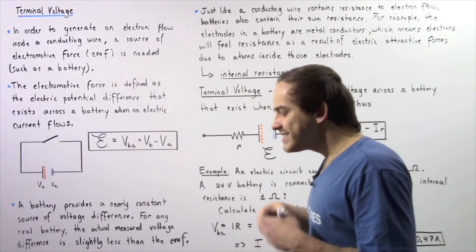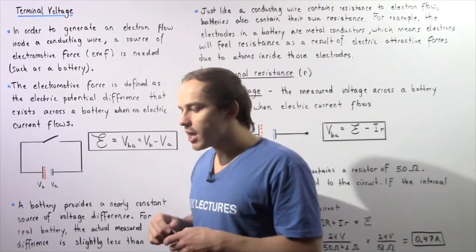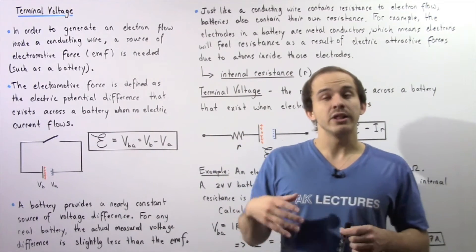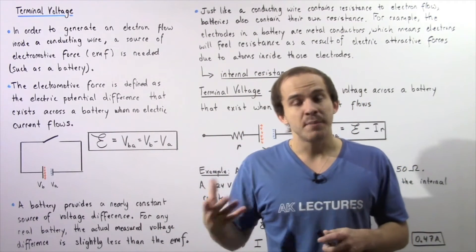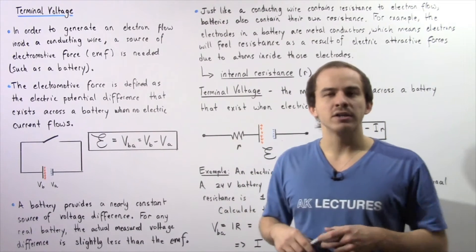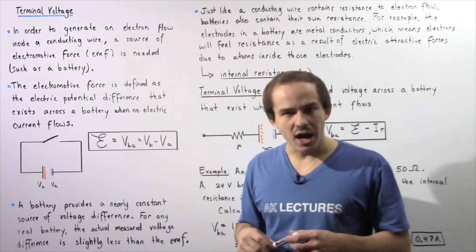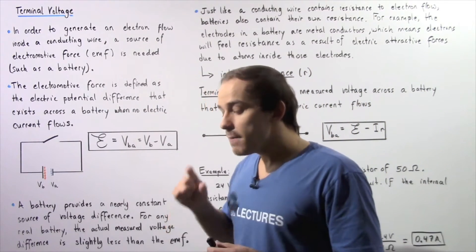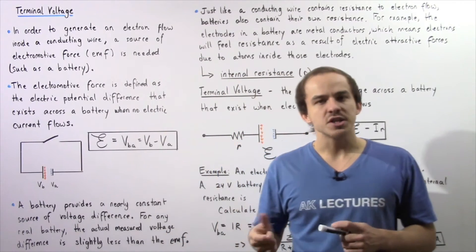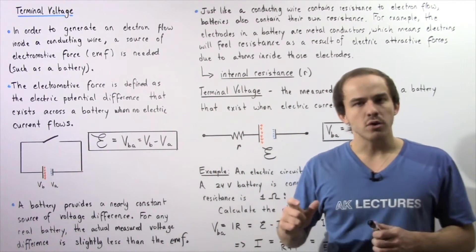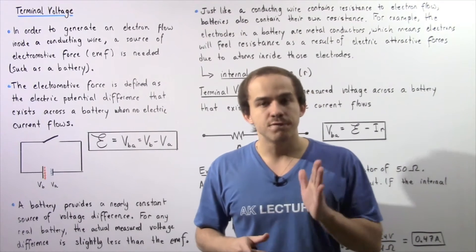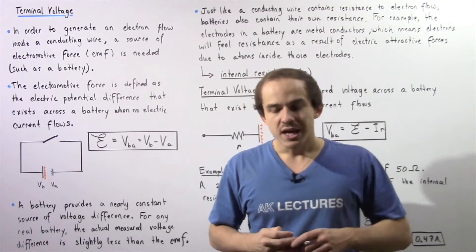A battery is not a constant source of electric current, because electric current depends on the resistance of our conducting wire. However, a battery is a constant source of electromotive force — it is a constant source of voltage.